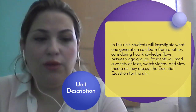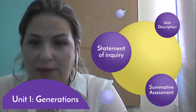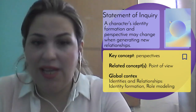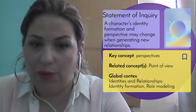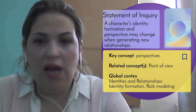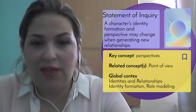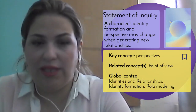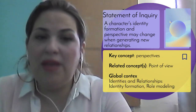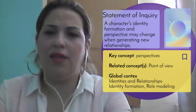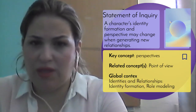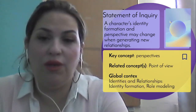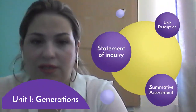Now we are going to look at the statement of inquiry. The key concept of this unit is perspectives, and we are going to concentrate on point of view. The global context is identities and relationships — identity formation and role modeling, and how that happens within generations. The statement of inquiry for this unit is that a character's identity formation and perspective may change when generating new relationships. Do you think that having new relationships with different generations can change or form a new identity, a new perspective, a new point of view? We're going to discuss that more.